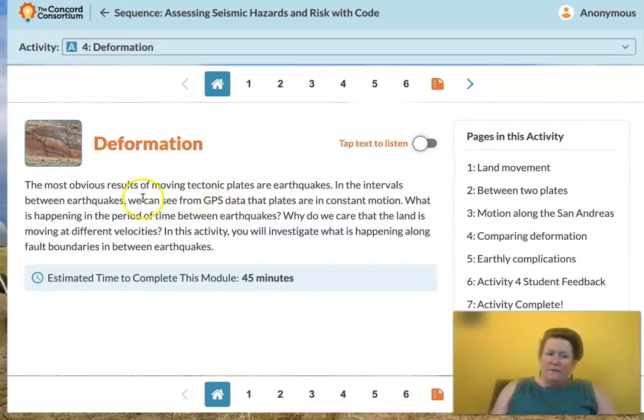The most obvious results of moving tectonic plates are earthquakes. In the intervals between earthquakes, we can see from GPS data that plates are in constant motion. What is happening in the period of time between earthquakes? Why do we care that the land is moving at different velocities? In this activity you'll investigate what's happening along fault boundaries in between earthquakes.